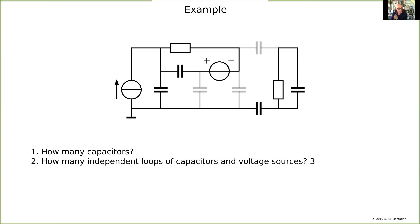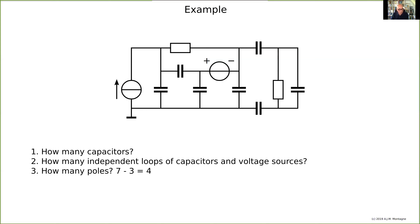How many independent loops of capacitors and voltage sources? You see I need to remove three capacitors before all loops of capacitors and voltage sources are broken and I have the tree of the network remaining, so there are no loops of capacitors and voltage sources anymore. So how many poles do I have? Seven minus three is four — seven capacitors, four poles.